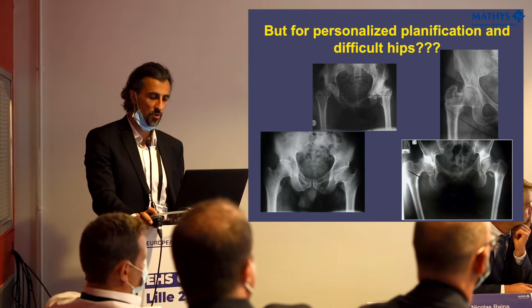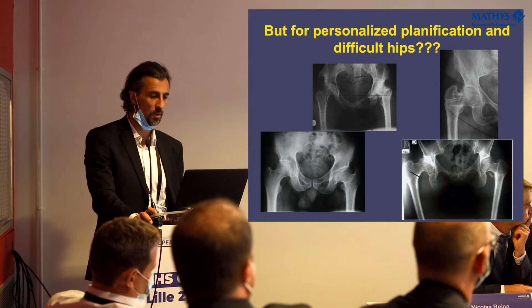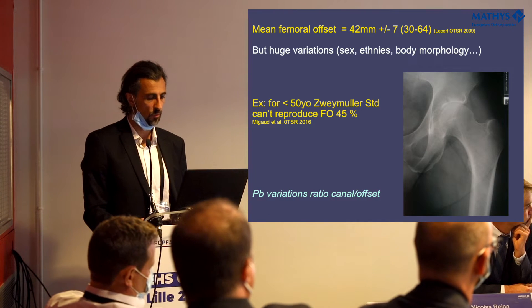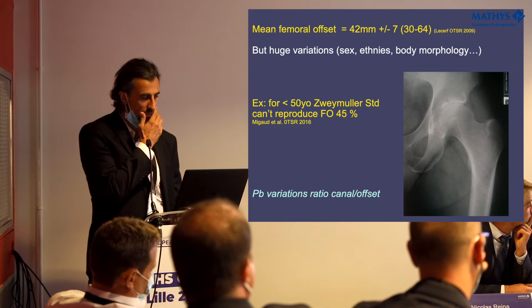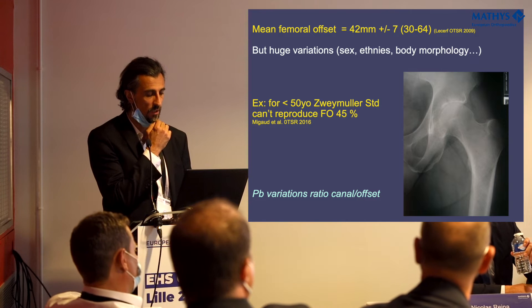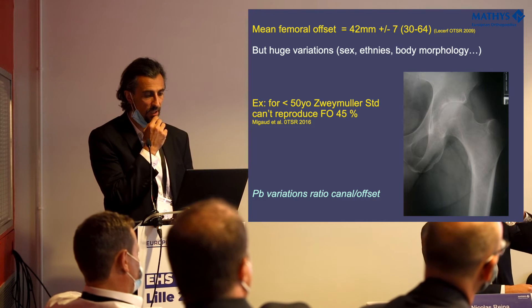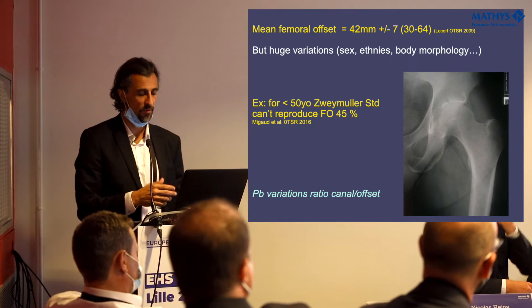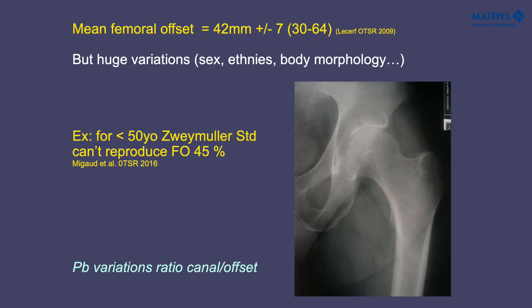This is fine for a simple case, but in cases of difficult hips — like cases with previous surgery, previous osteotomy, and so on — or if you want to personalize each case, we need a different approach. We have to take into account that in the standard population the mean femoral offset is 42 millimeters, but this ranges from 30 to 64 millimeters. There is a very large variation of femoral offset according to factors like sex, ethnicity, and body morphology.